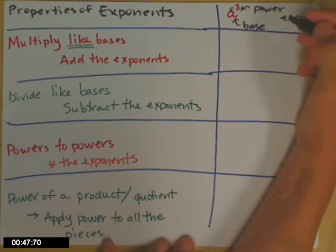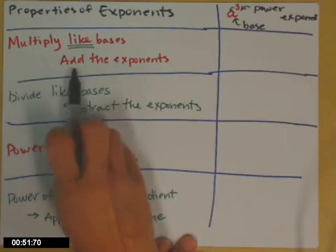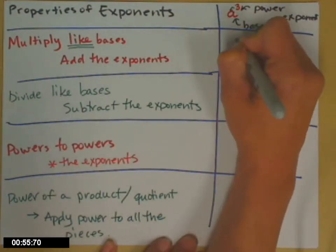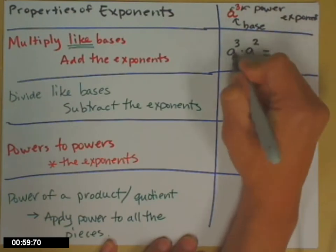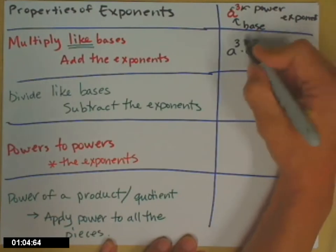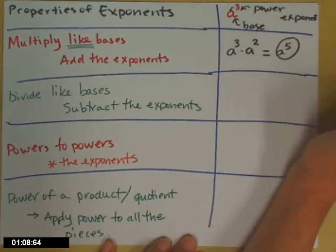So, I have six properties to go over. The first four are, if you multiply like bases, you add their exponents. So, if I have a cubed times a squared, the bases are like, they're both a's. To get the final result, I add the exponents. 3 plus 2 is 5.